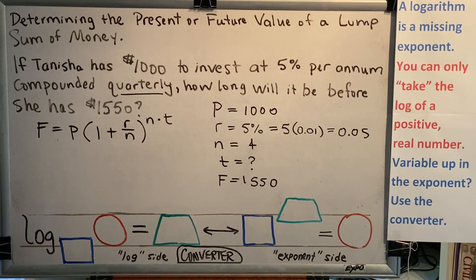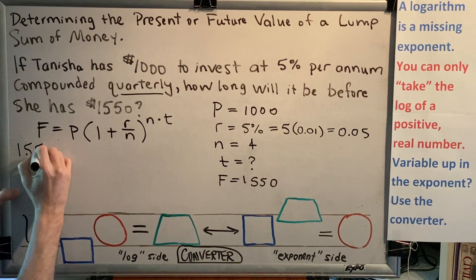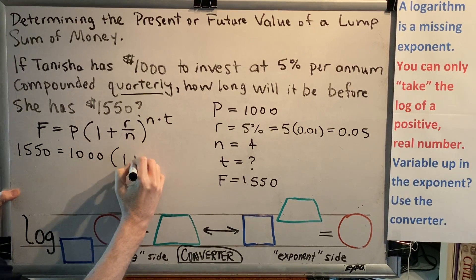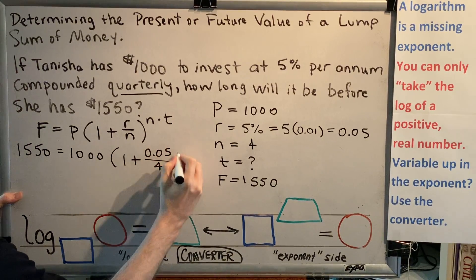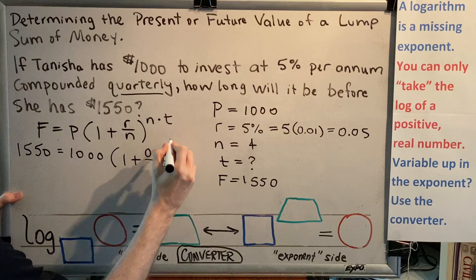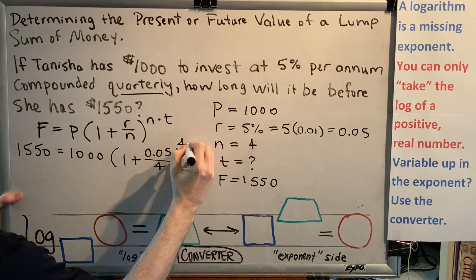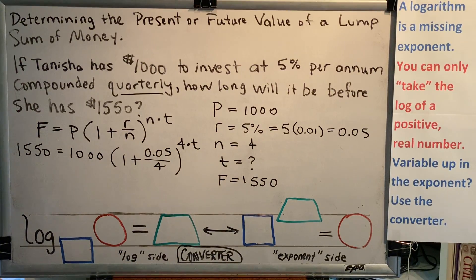So now that we have the value of each of our variables, we can plug into our formula. F is 1,550. P is 1,000. 1 plus R is 0.05. N is 4, close parentheses, raised to the N times T, which is 4 times. And we'll leave the T as T, since that's the variable that we're going to be solving for.